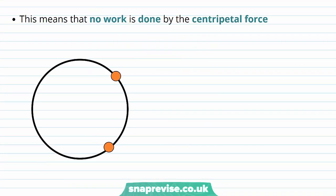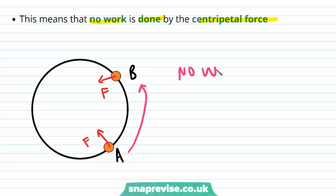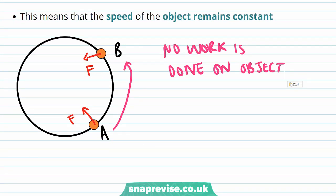This means that no work is done by the centripetal force. So when an object moves around a circle from A to B in uniform circular motion, no work is done on it by the centripetal force. And this means that the speed of the object remains constant. So the speed of the object at A is the same as the speed of the object at B. Remember that speed is the magnitude of velocity.